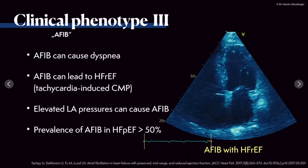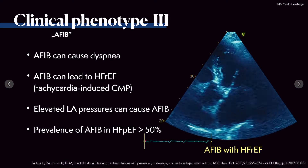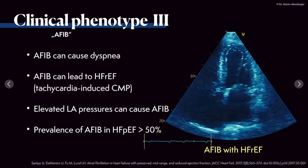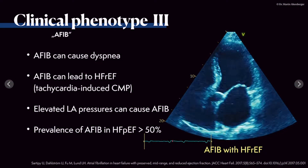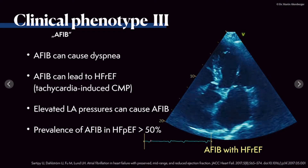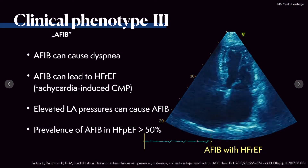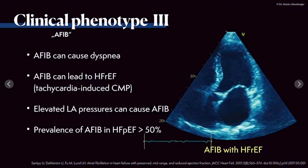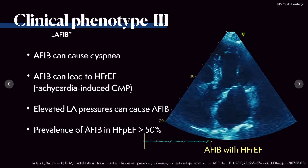Let's move on to clinical phenotype 3. This can be a little bit tricky because here I brought an example with atrial fibrillation and a case of heart failure with definitely reduced ejection fraction — below 40%, visually in the range of 30%. I brought this example because it nicely shows what the problem of a patient with atrial fibrillation can be. Atrial fibrillation can, per se, cause dyspnea, but it can also lead to heart failure with reduced ejection fraction because it's a tachycardia-induced cardiomyopathy.